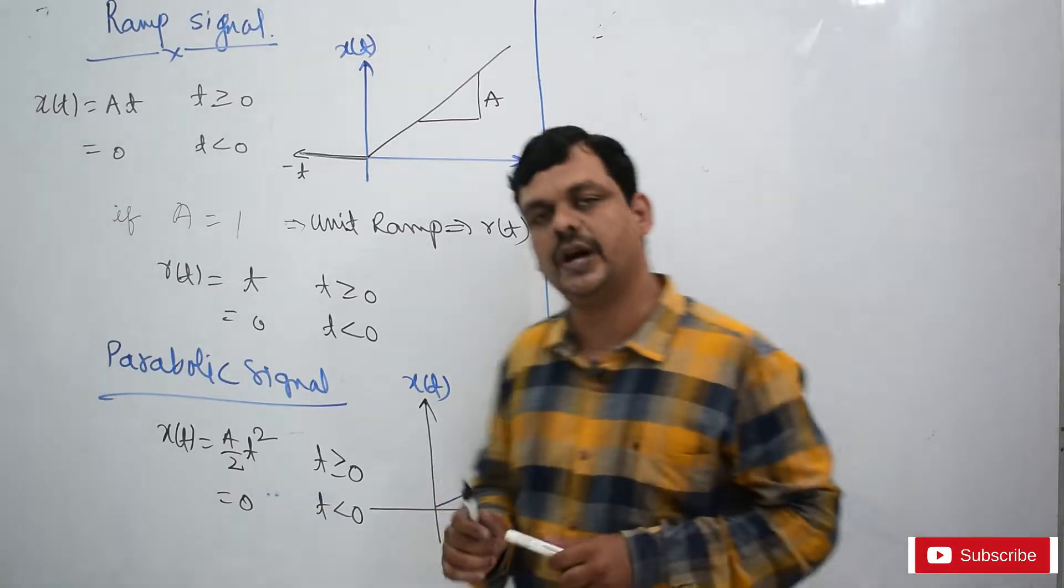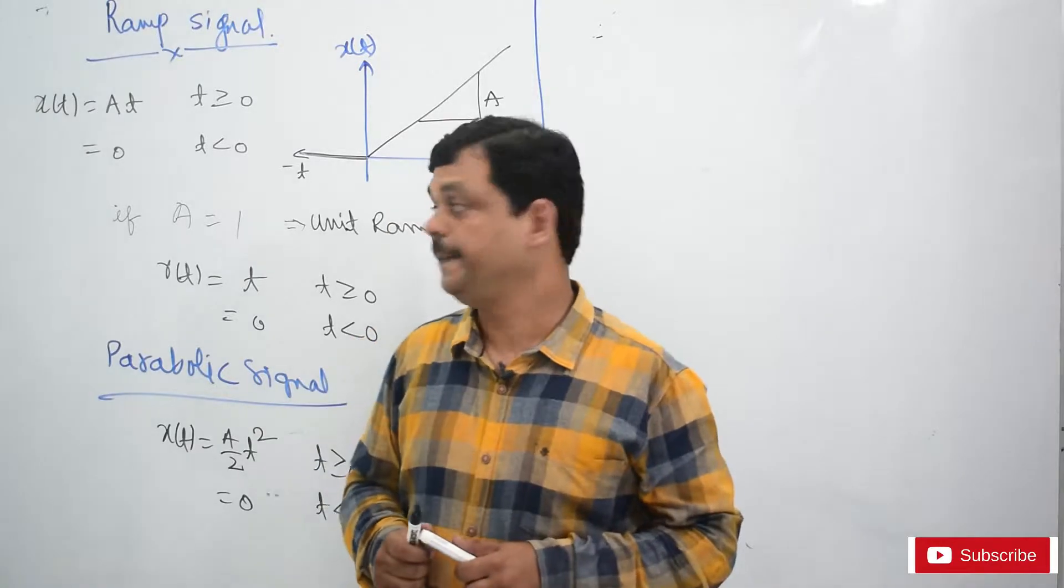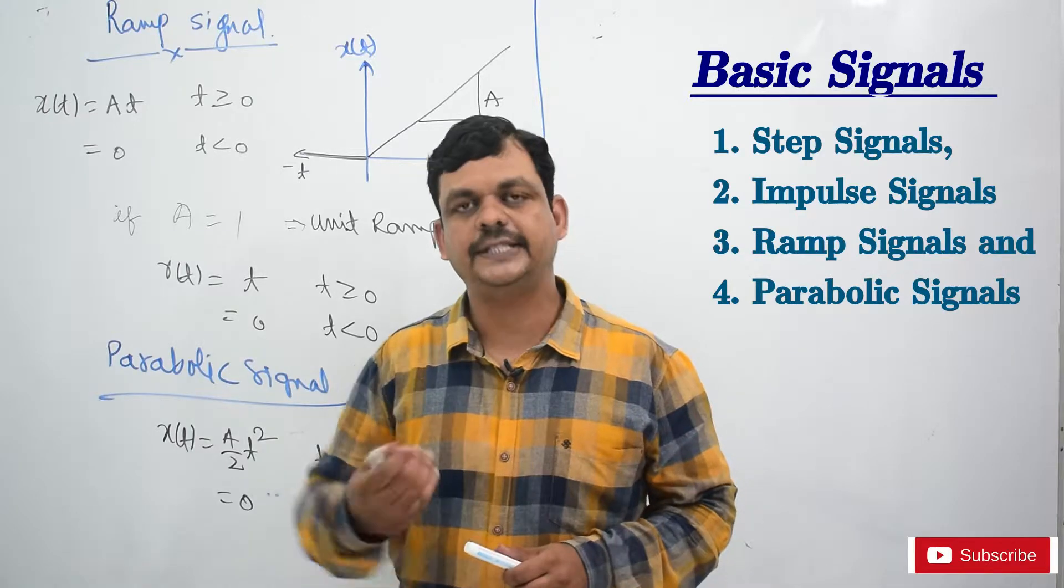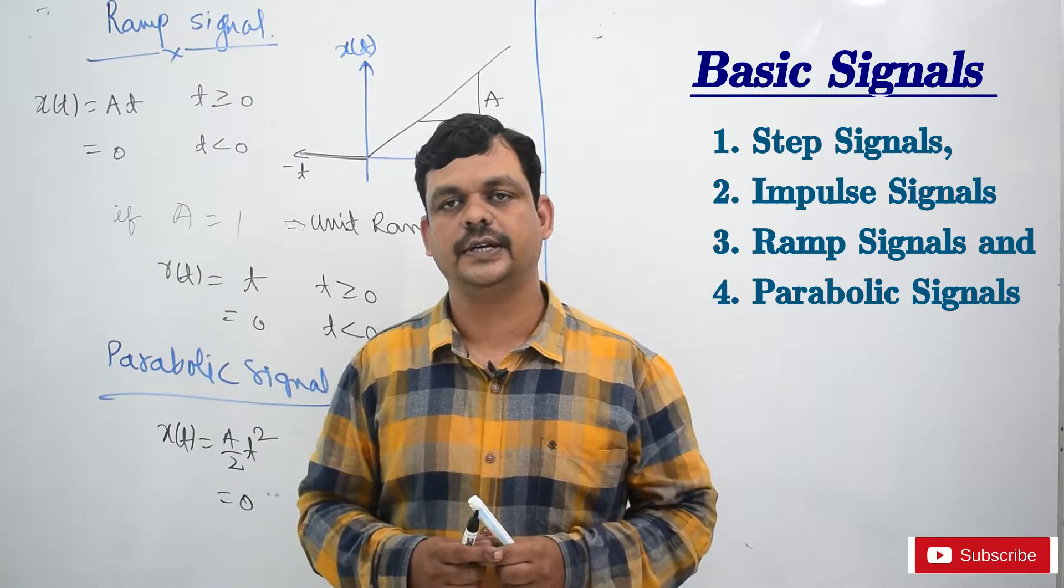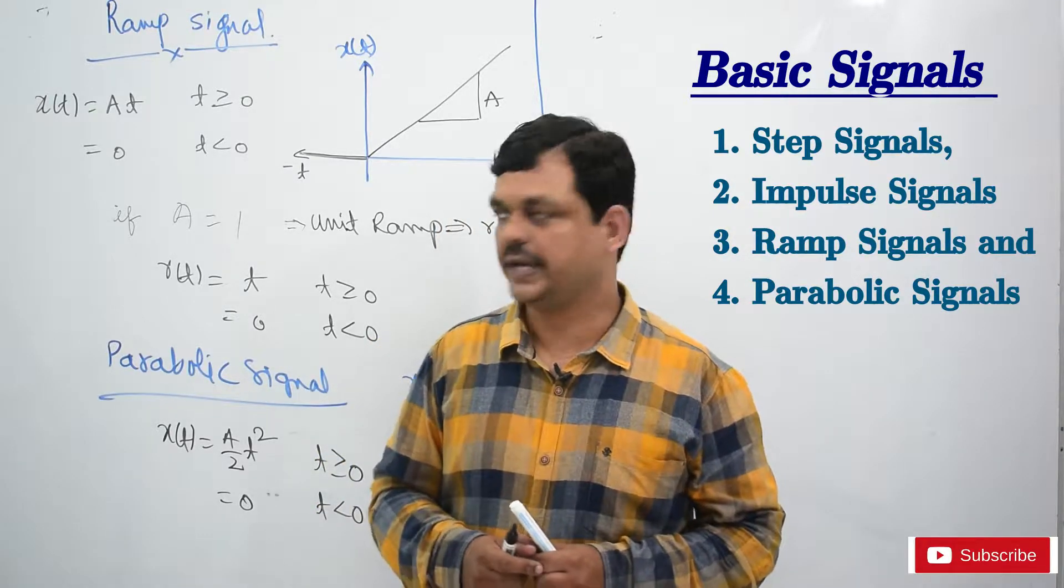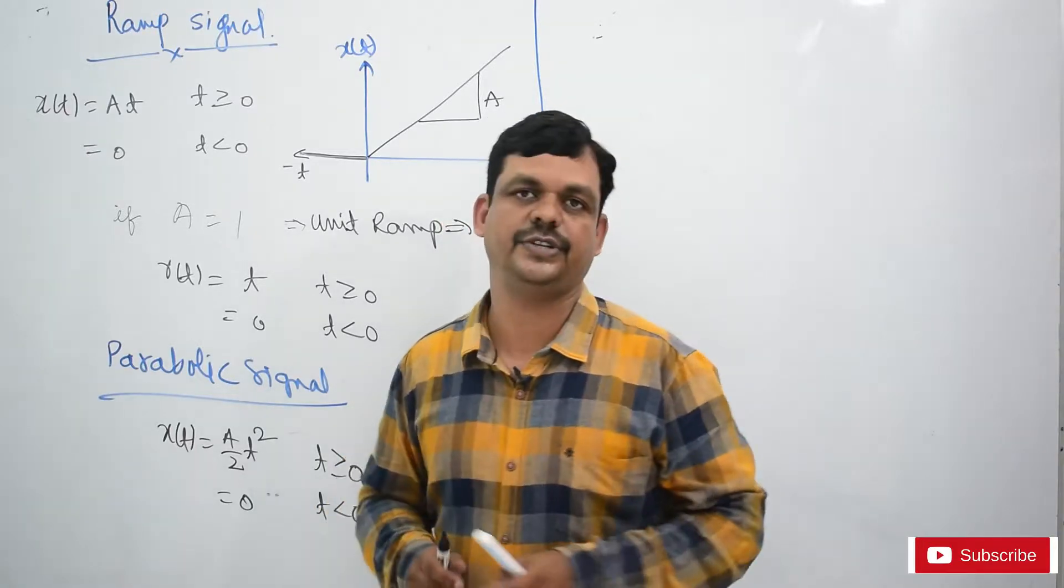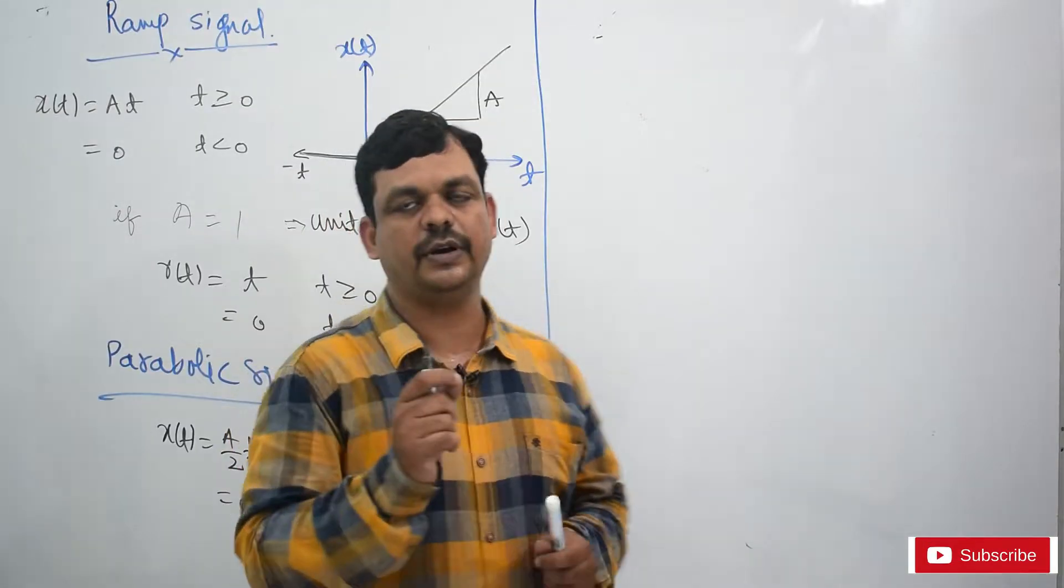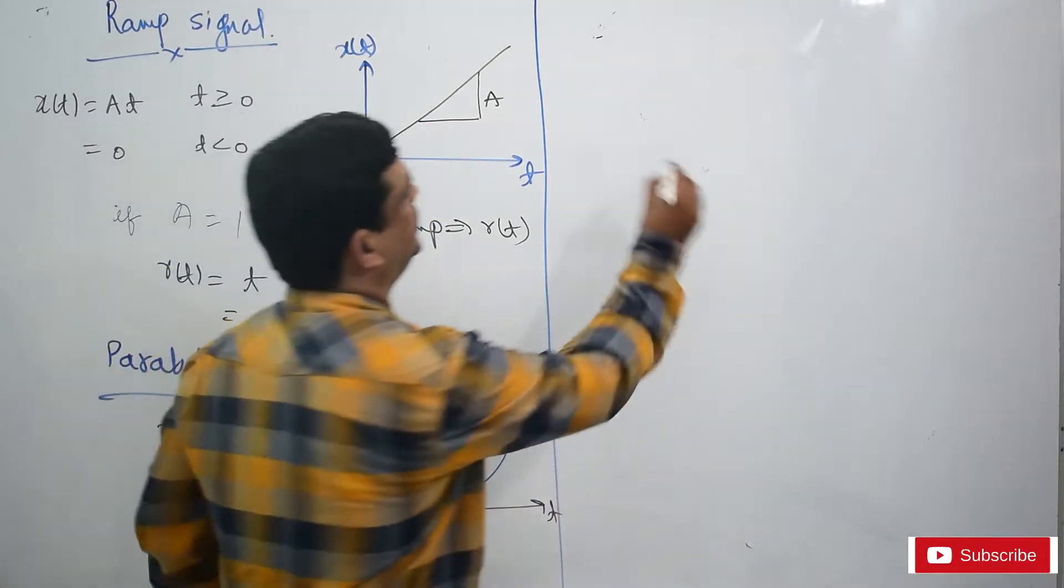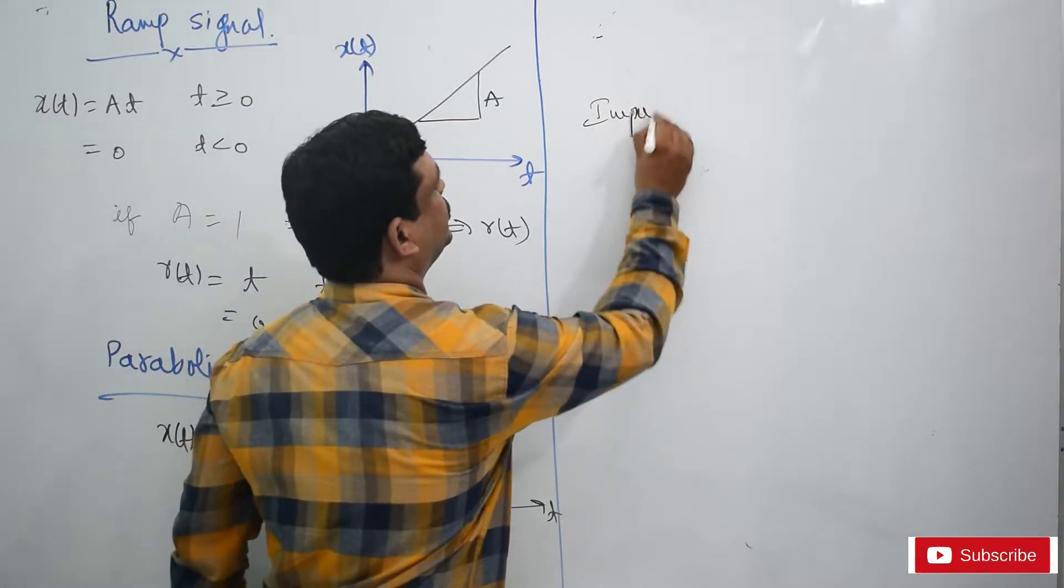These four are basic signals: step signal, impulse, ramp, and parabolic. These signals are also called elementary signals or singularity functions because differentiation and integration of one function becomes another function. That is, very small differentiation and integration operations on one function transforms it like this: impulse function, step signal, ramp, and parabolic signal.